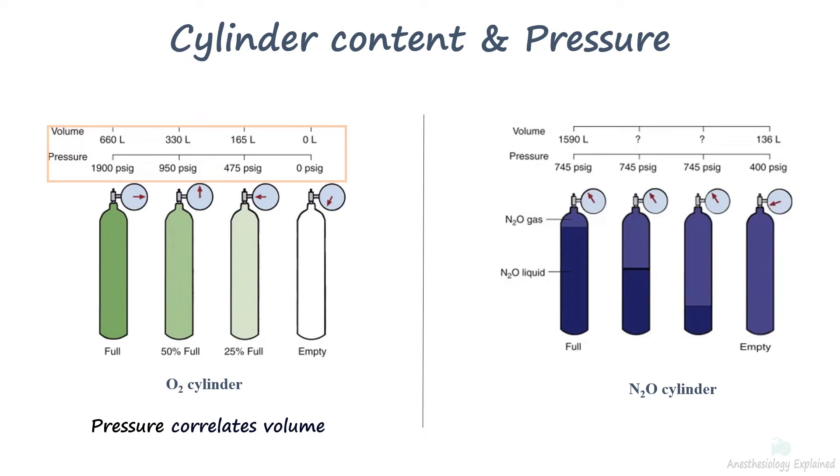The same is not true for nitrous oxide. As long as some liquid nitrous oxide remains in the tank and temperature remains constant, the pressure in the cylinder will be 745 psig regardless of the volume in the cylinder. At ambient temperature, nitrous oxide liquefies under high pressure, and the pressure of the gas above the liquid remains constant independent of how much liquid remains in the cylinder. Only when all the liquid has evaporated does the pressure start to fall, and then it does so rapidly as the residual gas flows from the cylinder.